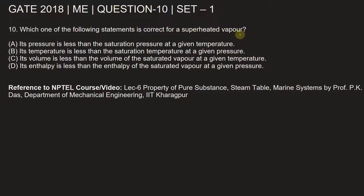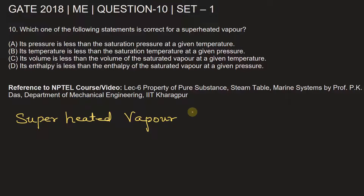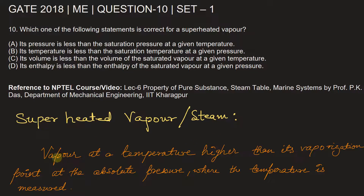Let's understand what superheated vapor is — we can also say superheated steam, and for water vapor we can say it's steam. According to definition, vapor at a temperature higher than its vaporization point at the absolute pressure where the temperature is measured. That means the temperature of vapor must be greater than the saturation temperature.